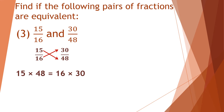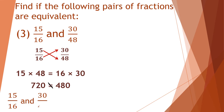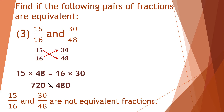Everyone knows how to do multiplication. Pause the video and do the multiplication on your own and check. 15 multiplied by 48 is equal to 720 and 16 multiplied by 30 is equal to 480. But 720 is not equal to 480. So we can say that 15 upon 16 and 30 upon 48 are not equivalent fractions.